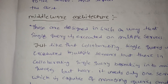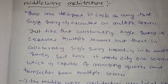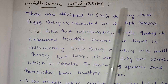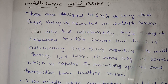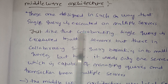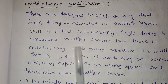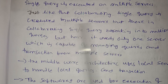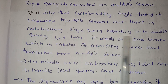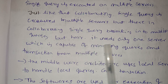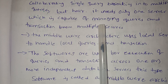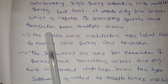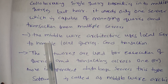Now we have a middleware architecture model. This is designed in such a way that a single query is executed on multiple servers — just like collaborating server architecture. But here, instead of breaking the query into multiple queries, it needs only one server which is capable of managing queries and transactions from multiple servers.